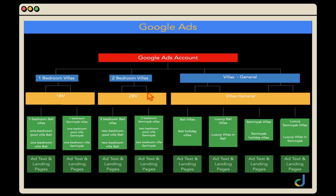Under each campaign you have individual ad groups. An ad group around one bedroom villas targets all one bedroom villa keywords and takes people through to the one bedroom villa landing page. Same with two bedroom villas — it has keywords around two bedroom Bali villas and two bedroom Seminyak villas taking people to the relevant landing page. So if someone searches for a one bedroom villa they go to the one bedroom page, and a two bedroom search goes to that relevant page.